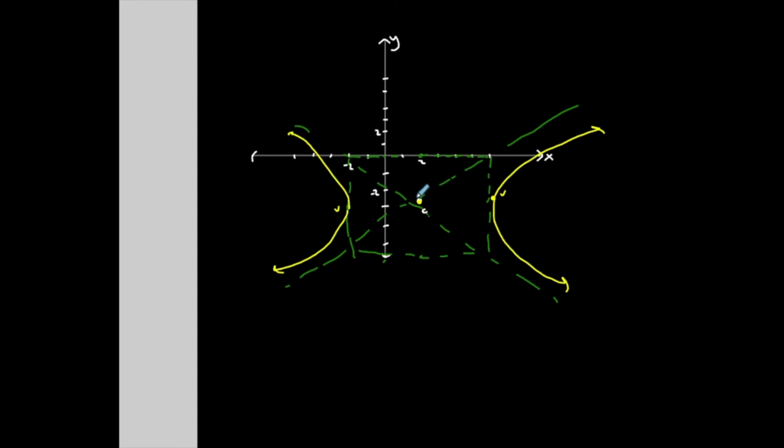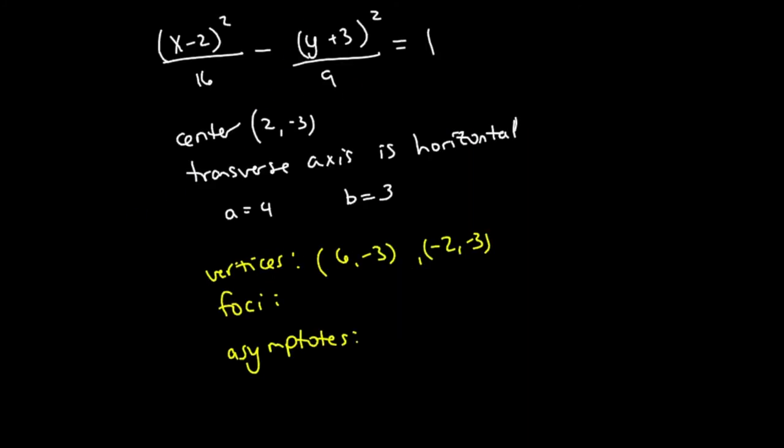My asymptotes, I had to go up B and over A. So the slope is B over A. So let's find the equation of the asymptotes. Y is equal to negative 3 plus or minus B over A, 3 over 4, X minus 2.